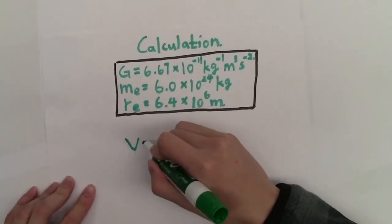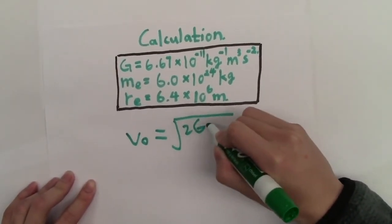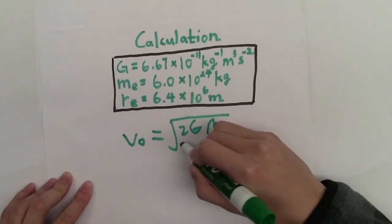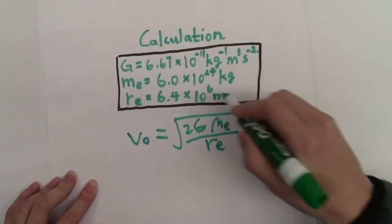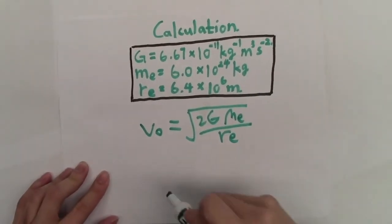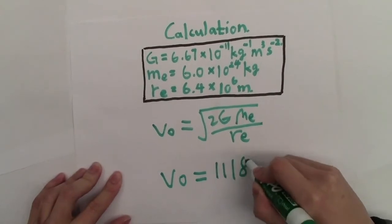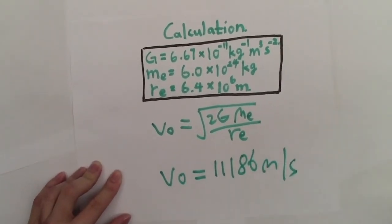We have obtained the formula v₀ equals square root of 2GMₑ divided by rₑ. Here are the three constants needed for the calculation. Each is given a specific value. We plug them into the formula, and we have the escape velocity 11,186 meters per second.